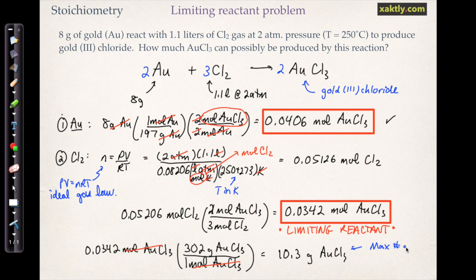Now if you were to run this reaction in reality, you might not actually produce 10.3 grams of gold chloride. This is just the maximum theoretical yield that you would get.